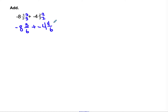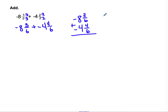Same signs — find the sum — so my final answer is going to be negative. I'm going to line up my place values just like when adding decimals or multi-digit numbers. These were both negatives, so I'll put the negatives in front. I'll add them like positive numbers for now: 3 sixths plus 4 sixths is 7 sixths; negative 8 plus negative 4 is negative 12.